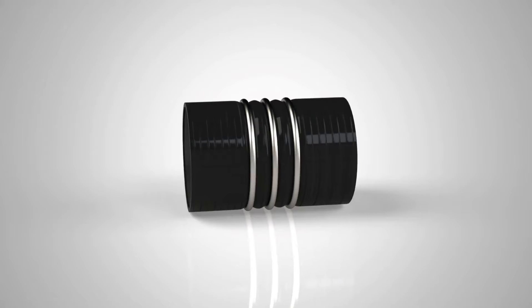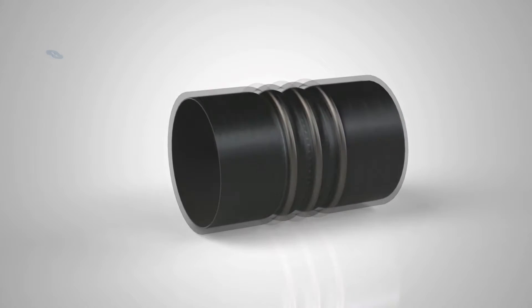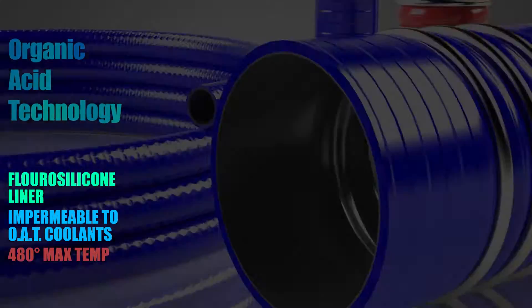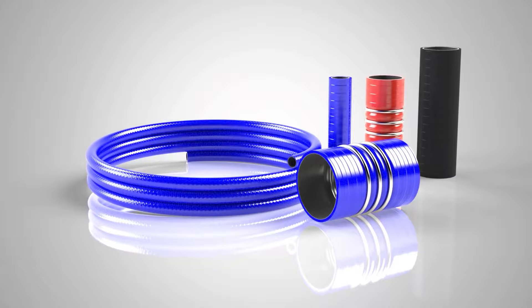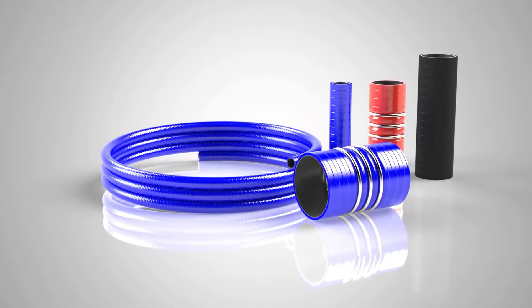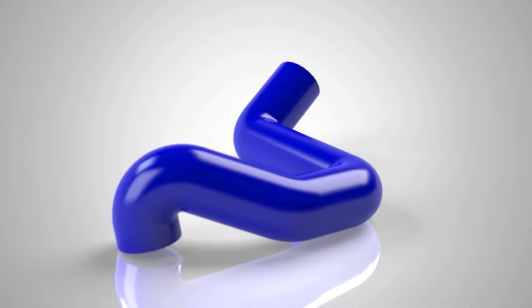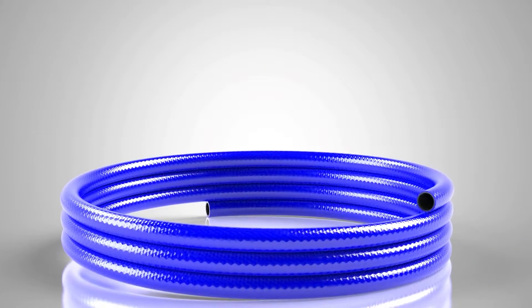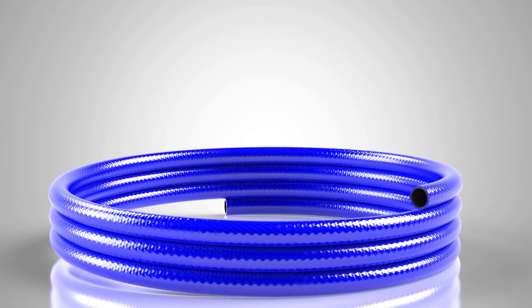OAT coolants, known as organic acid technology coolants, are commonly used today for their longevity. We offer a special inner liner that does not allow for the permeation of OAT coolants, as this is a leading cause of premature failure on a standard silicone hose. Consult with our team if you require special custom sizes.